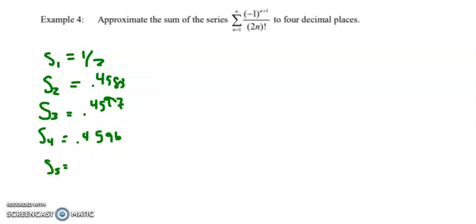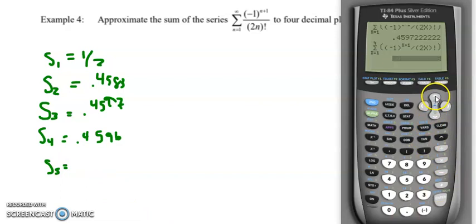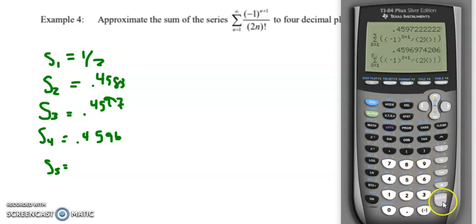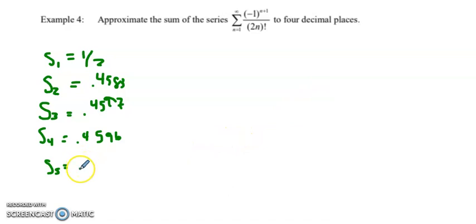So let's see if I can get to the next decimal place, fourth decimal place repeating in just a minute here with the fifth partial sum. And look at that, 0.4596. So this is the sum accurate to four decimal places. Once you have four decimal places repeating, you have found the sum accurate to that many decimal places.